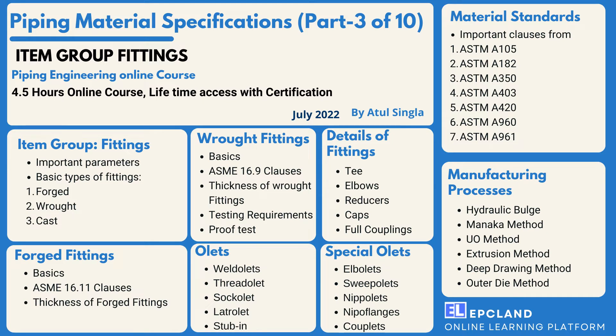Next, we'll look into outlets and special outlets, covering all sections: weldolets, sockolets, threadolets, elbolets, latrolets, nipolets, and more. We'll cover what these items are, when and where they are used, their applications, how they are represented in piping material specifications, and their use in live projects.